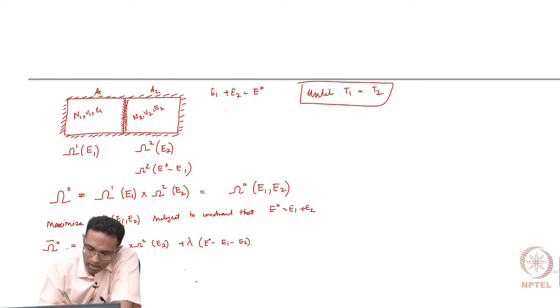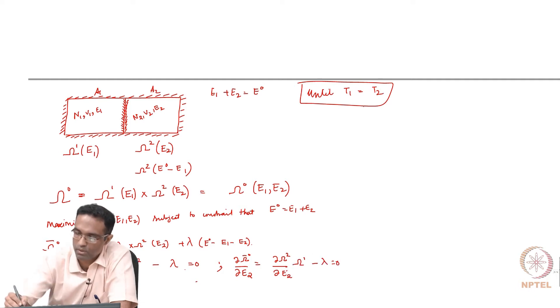We get dou omega naught bar with respect to E1, and that would mean dou omega 1 by dou E1 times omega 2 minus lambda equal to 0, and dou omega bar naught with respect to E2 will be dou omega 2 by dou E2 times omega 1 minus lambda equal to 0.